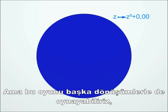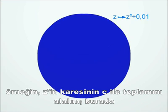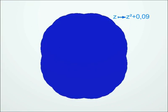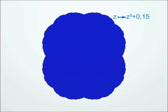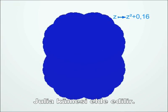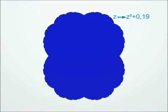But we can play the same game with other transformations — like those of the form Z squared plus C, where C is a complex number that we can choose at will. For each complex number C, we therefore have a Julia set whose shape changes when C changes. You can see a few examples here.